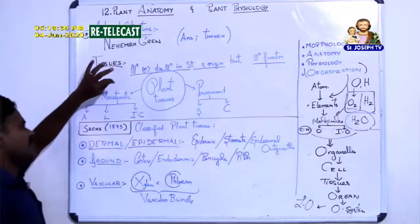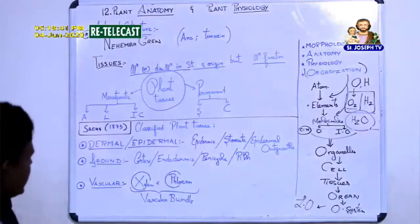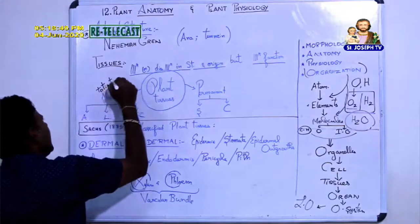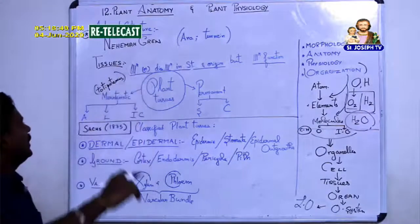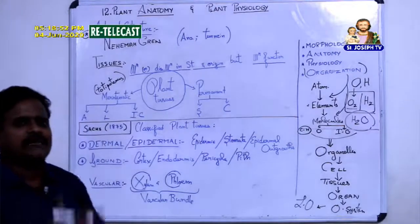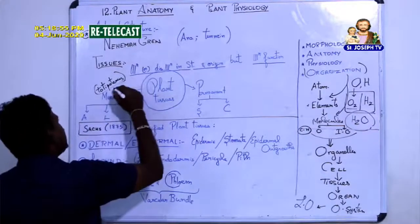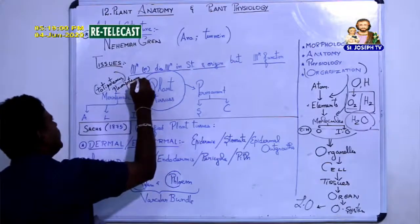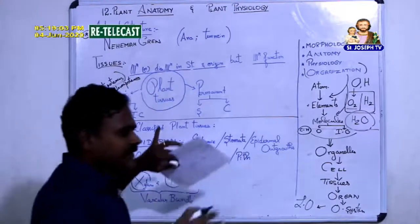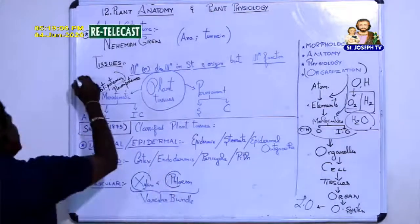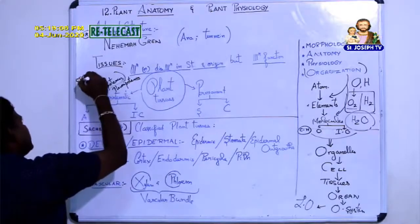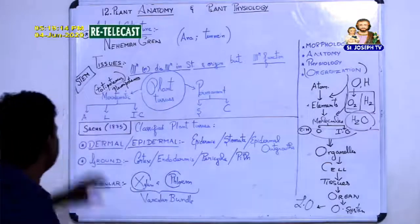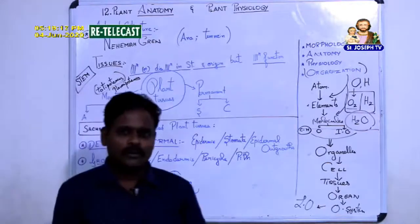The specialty of meristematic tissue is totipotency — also called pluripotency — which means they have the ability to form some other cell or tissue. In animals, the equivalent is called stem cells. For example, bone marrow contains stem cells that can be made into skin, muscle, or blood cells. Similarly, in plants, meristematic tissues have this totipotency or pluripotency.